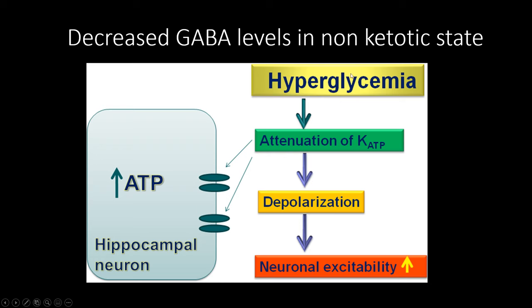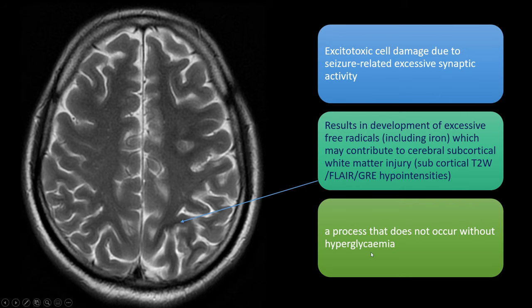Regarding pathophysiology: decreased GABA levels in the non-ketotic hyperglycemic state lead to attenuation of potassium-ATP channels, causing depolarization, neuronal excitability, and seizures. Hyperglycemia leads to excitotoxic cell damage, resulting in development of excessive free radicals — specifically iron — which are deposited in the subcortical white matter, causing subcortical white matter injury. This is seen as hypointensities on T2, FLAIR, and GRE in the subcortical white matter, which is pathognomonic for non-ketotic hyperglycemia-induced seizures.